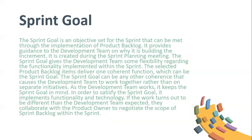Sprint goal: the sprint goal is an objective set for the sprint that can be met through the implementation of the product backlog. It provides guidance to the development team on why it is building the increment. It is created during the sprint planning meeting. The sprint goal gives the development team some flexibility regarding the functionality implemented within the sprint. The selected backlog items deliver one coherent function, which can be the sprint goal. The sprint goal can also be any other coherence that causes the development team to work together rather than on separate initiatives. As the development team works, it keeps the sprint goal in mind; in order to satisfy the sprint goal, it implements functionality and technology. If the work turns out to be different than the development team expected, they collaborate with the product owner to negotiate the scope of the sprint backlog within the sprint.